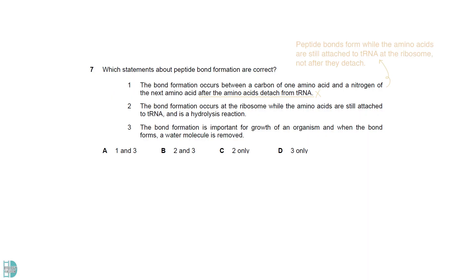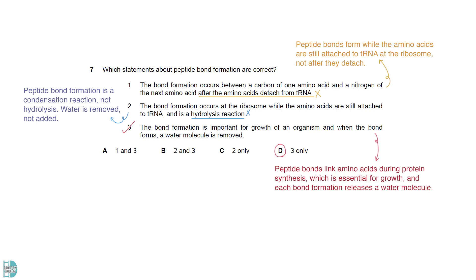Statement 1 is incorrect because peptide bonds form while the amino acids are still attached to tRNA at the ribosome, not after they detach. Statement 2 is incorrect because peptide bond formation is a condensation reaction, not hydrolysis. Water is removed, not added. Statement 3 is correct because peptide bonds link amino acids during protein synthesis, which is essential for growth, and each bond formation releases a water molecule. So the correct answer is 3 only.